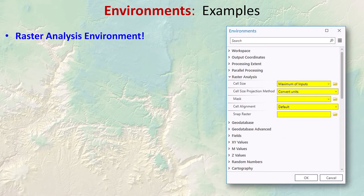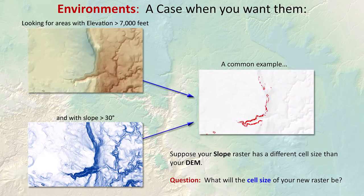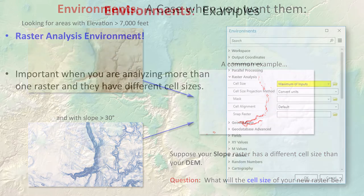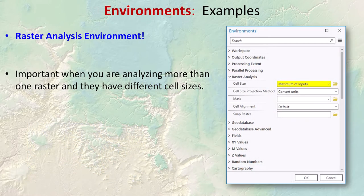The raster analysis parameters are important when a tool uses more than one raster. Rasters often have different cell sizes, so what happens when you analyze two rasters with different cell sizes? For example, if you have an elevation raster and a slope raster and want to find parts of the landscape above a certain elevation with a certain slope range, you get a new raster showing where those conditions are met — but what cell size will that new raster have? The cell size parameter lets you specify that value.